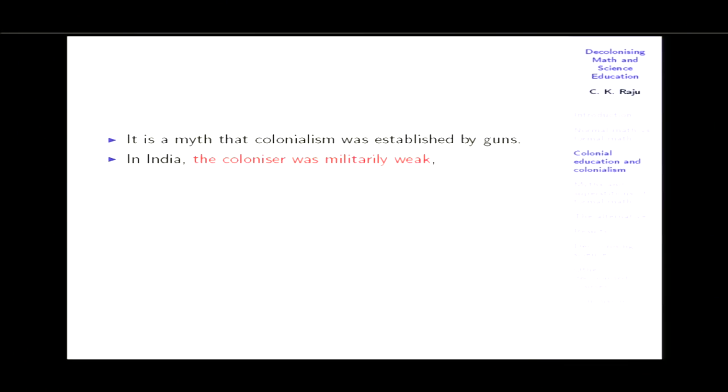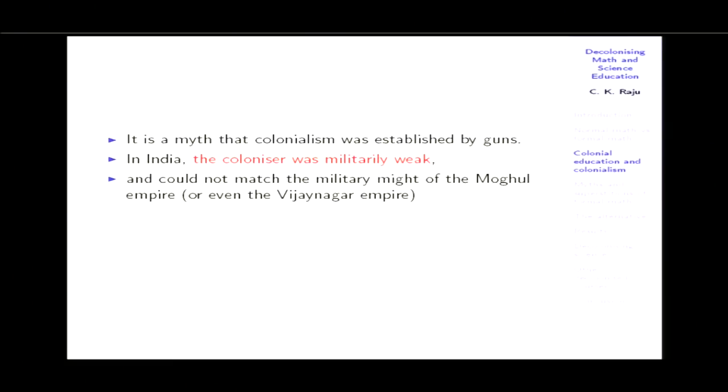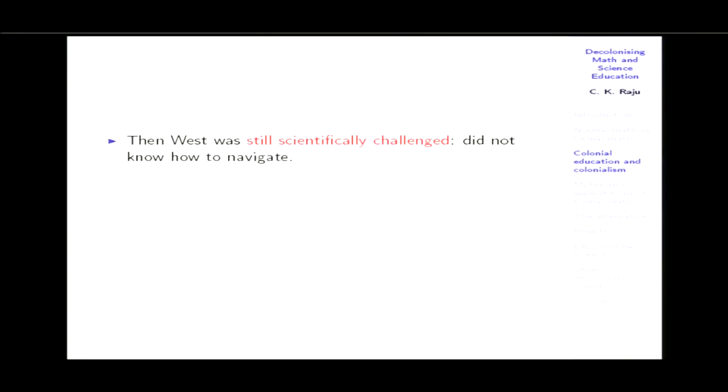It's a myth that colonialism was established by guns. In India, the colonizer was militarily weak and could not match the Mughal Empire or even the Vijayanagara Empire. Their technology was very inferior, and their first military victory came after 250 years — in 1757. They used the technology of bribery and deceit to an extreme extent, bribing the opposing army with false promises at the skirmish of Plassey. The West was still technologically challenged: it did not know how to navigate, and the British longitude prize was only awarded in 1762 — and even then only half was given because they were not sure it had been won.